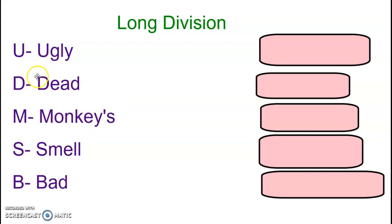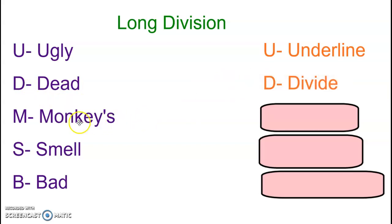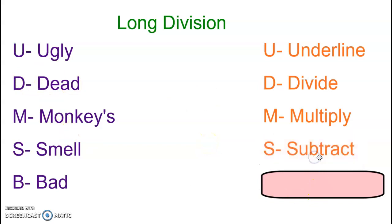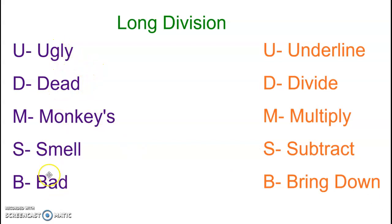So for you, the ugly, what that really means is you're going to be doing some underlining. And I'm obviously going to show you some examples. The D for the dead is you're going to have to divide. The M in monkeys really means you're going to multiply. The S for smell is really going to be subtracting. And the B for bad is bring down. So if you can have the ugly, dead monkey smell bad kind of phrase, you will know that you'll have to underline, divide, multiply, subtract, and bring down. You have to do these steps in order. You can't jump around.